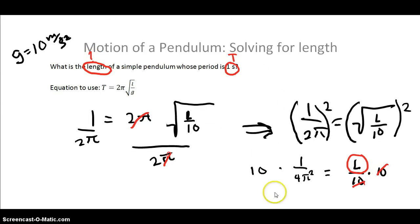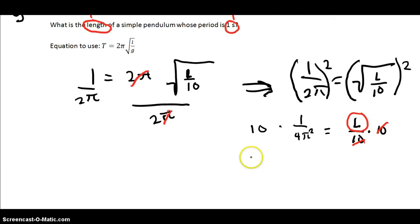So let's go ahead and finish solving for this. 10 over 4π squared is equal to the length. And if we do it on our calculator, we'll get the value. After typing that in on our calculator, we get a value: the length gives us a value of 0.253 meters.